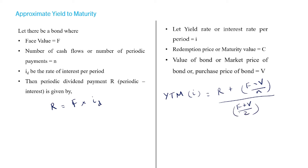The approximate yield to maturity I is given by the formula: I = (R + (F − V) / N) / ((F + V) / 2). This is the formula to find the yield to maturity when the market price of the bond is given. Usually all other values are given and we find V, but if V is given, we can use this formula to find the approximate yield to maturity I.